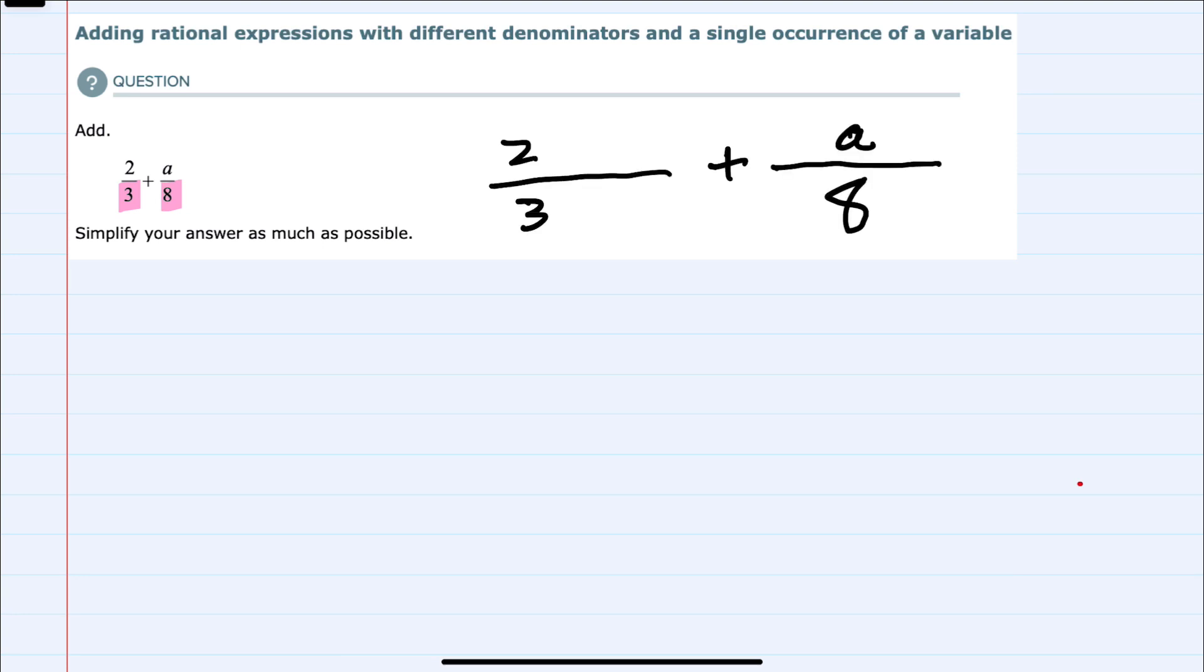And between those denominators, the three and the eight, the lowest common denominator is the least common multiple of 3 and 8 which is 24. So I want to rewrite each one of these as having a denominator of 24.